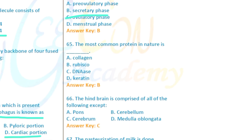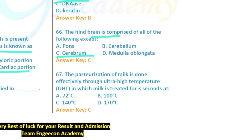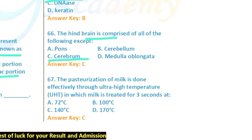Question 65: The most common protein in nature is RuBisCO (an enzyme). Question 66: The hindbrain is composed of cerebellum, pons, and medulla — not cerebrum (cerebrum is forebrain). Question 67: Sterilization of milk is done effectively through ultra-high temperature (UHT), in which milk is heated to 138°C for 2–3 seconds.